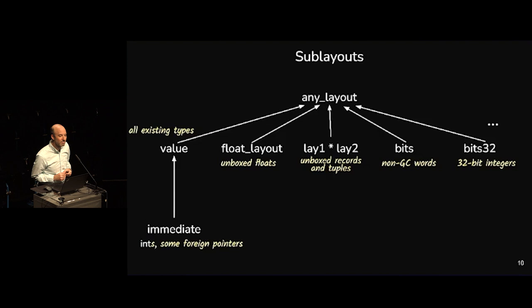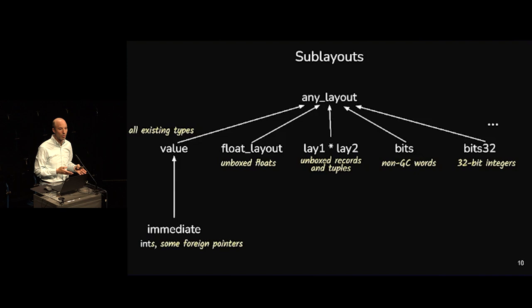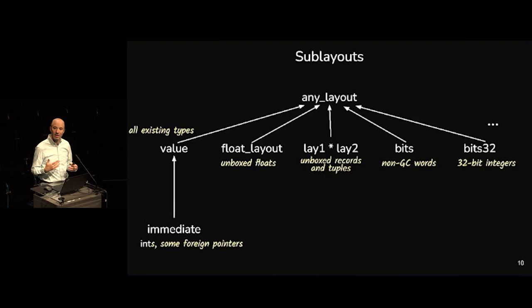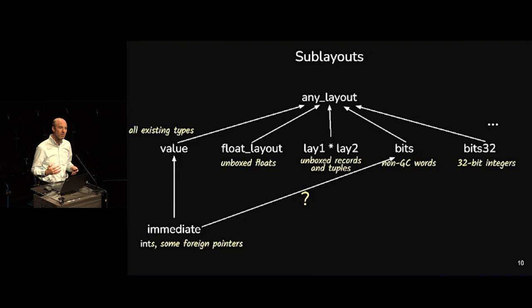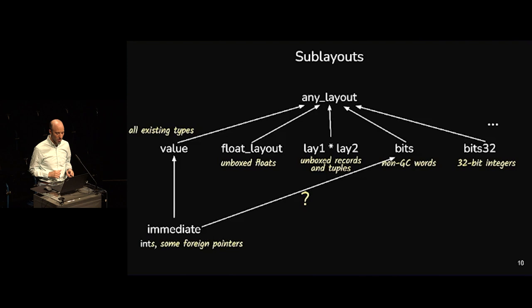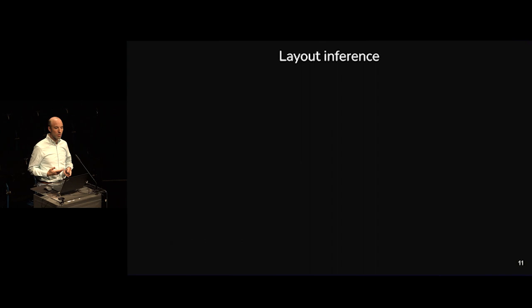A question about float layout versus bits or bits64: some machines use different registers for floating point values versus other values, so we want to be able to distinguish them. One open question is whether immediate should also be a sub-layout of bits — formally this works, since bits is word-sized and the GC can't look at it, and that applies to immediate too. Adding this extra sub-layout link would complicate type inference a little, but we don't need it for backward compatibility — it's an open question.